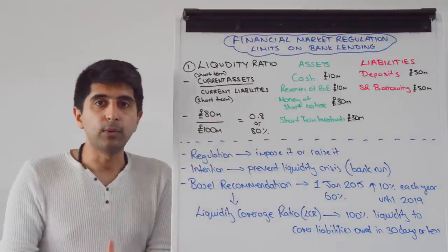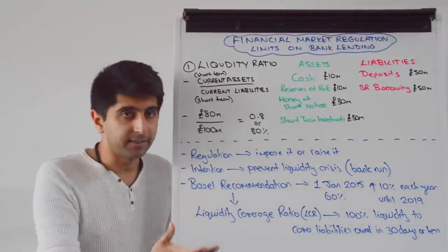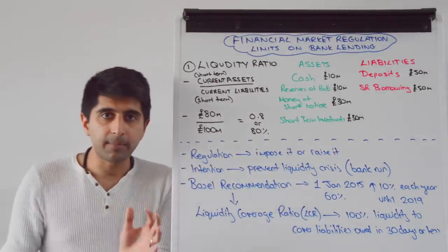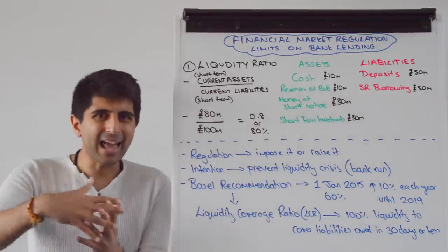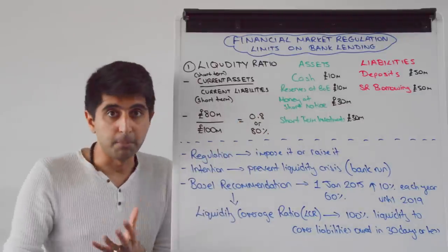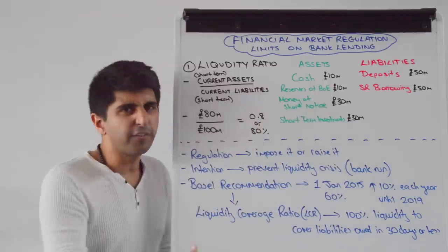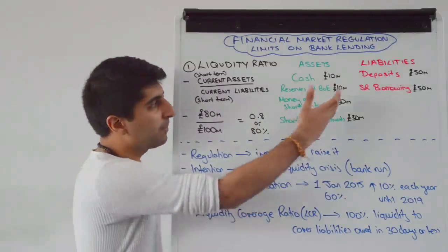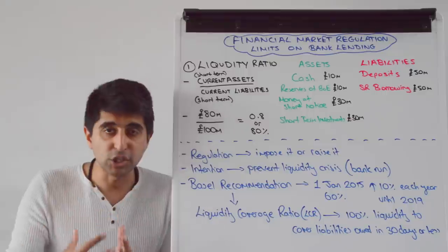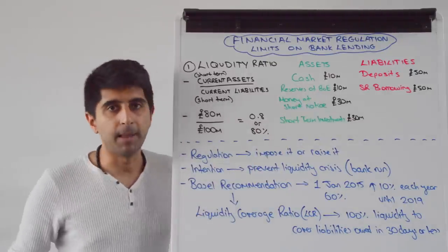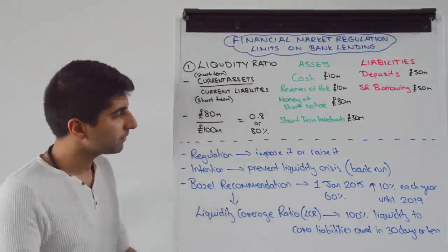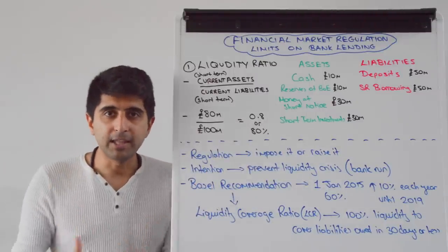The regulation could be to impose a liquidity ratio if it doesn't exist already, or to raise it. The intention is to prevent a liquidity crisis. This is a little more developed than the cash ratio, whereby slightly less liquid assets are included — money at short notice and short-term investments — whereas the cash ratio was just immediate cash assets. The idea is that these are still highly liquid, so in case you need to pay back any short-term liabilities you will have enough liquid assets. Maybe the PRA or the Basel Committee decide that 80% is not good enough and can raise it to 90% or 100%.